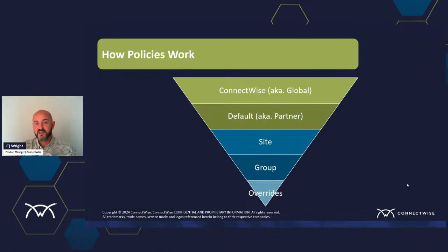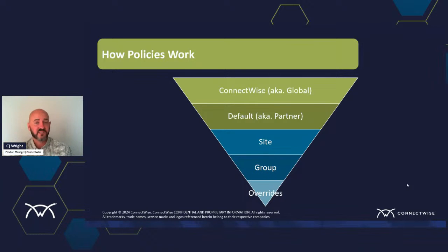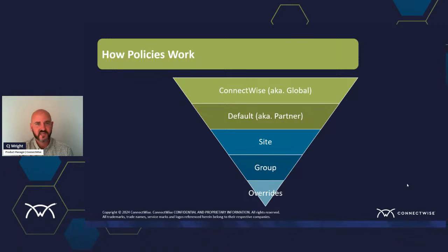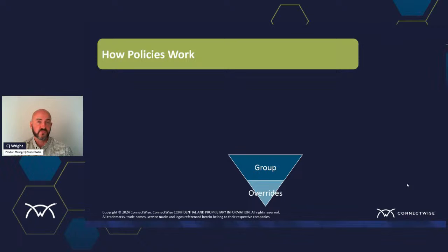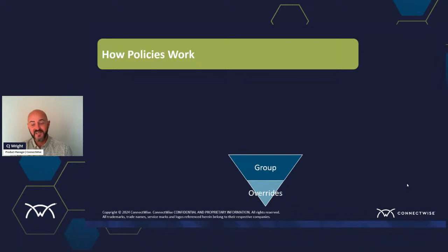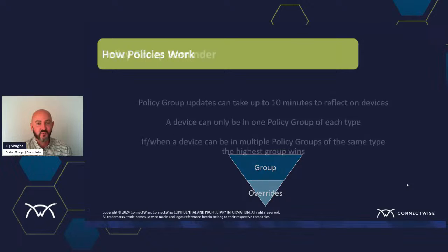The next layer down is a default policy. Default policies and the packages they are contained within, along with packages for assignments to sites, were covered yesterday — definitely encourage you to watch that video. Today, we're going to focus more on groups and overrides. These are your lowest level of granularity and do not require packages. For overrides, you don't even need a policy. We'll get into that in more detail as we go through.